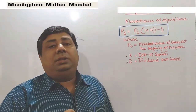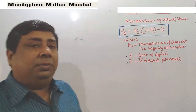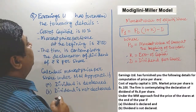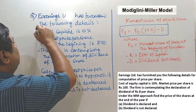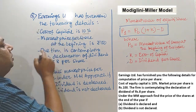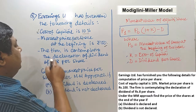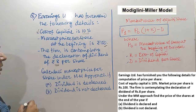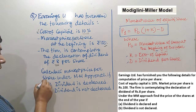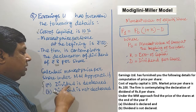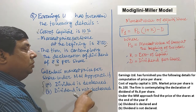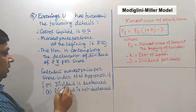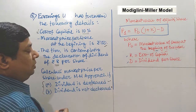Let's solve one question under the Modigliani and Miller approach. Unmixed Limited has furnished the following details. Cost of capital is 10%, market price per share at the beginning is Rs.100. The firm is contemplating the declaration of a dividend of Rs.8 per share. Calculate the market price per share under the MM approach for two cases: when dividend is declared and when dividend is not declared.